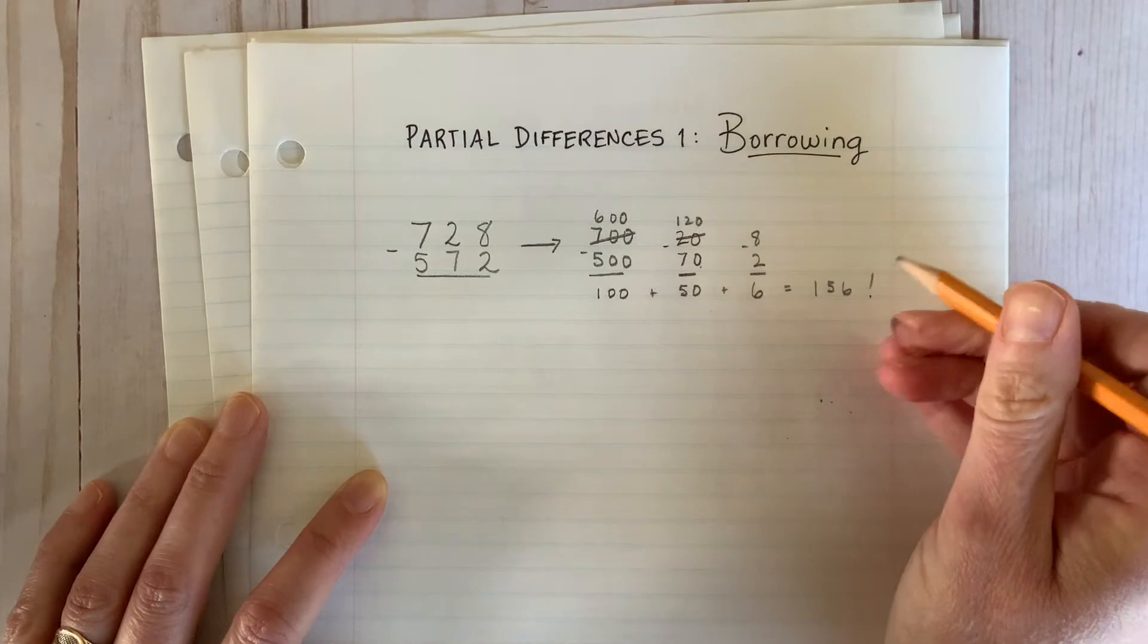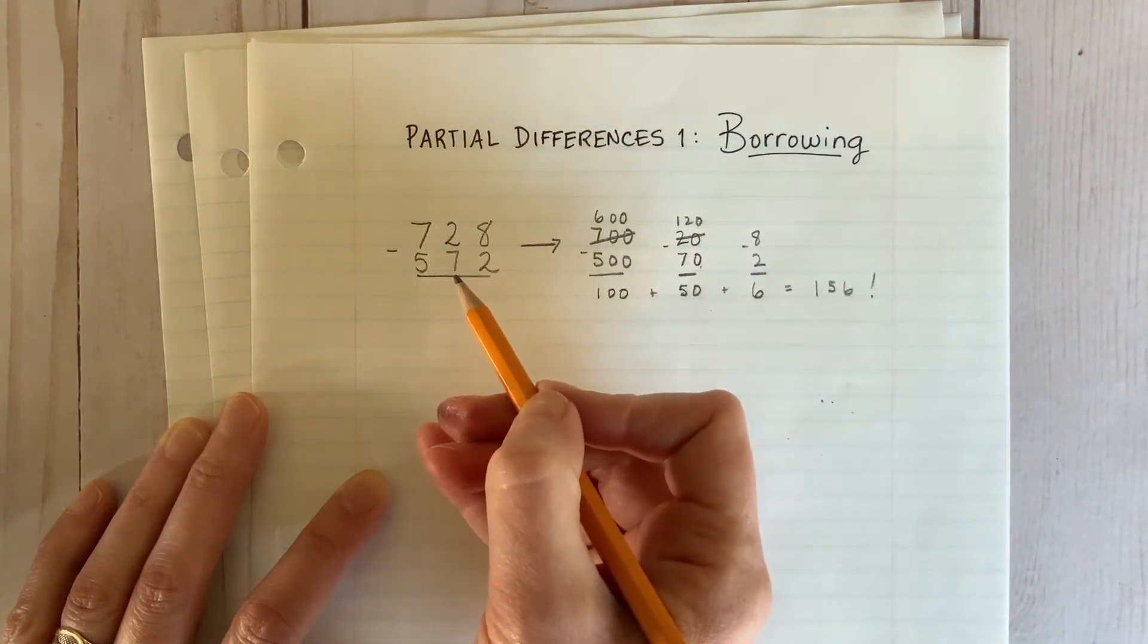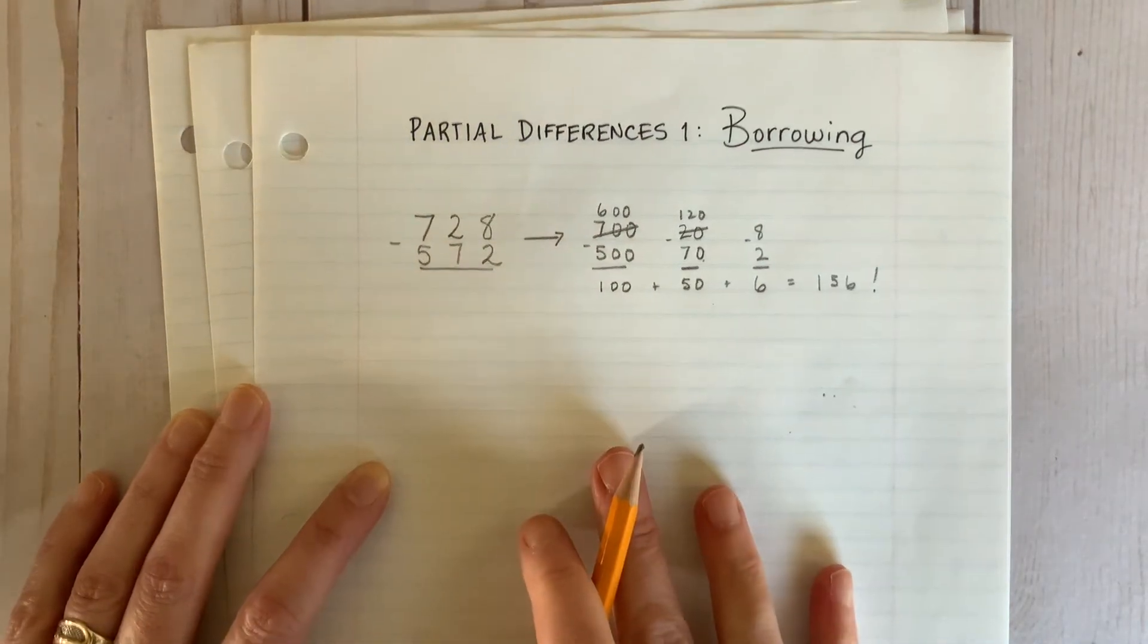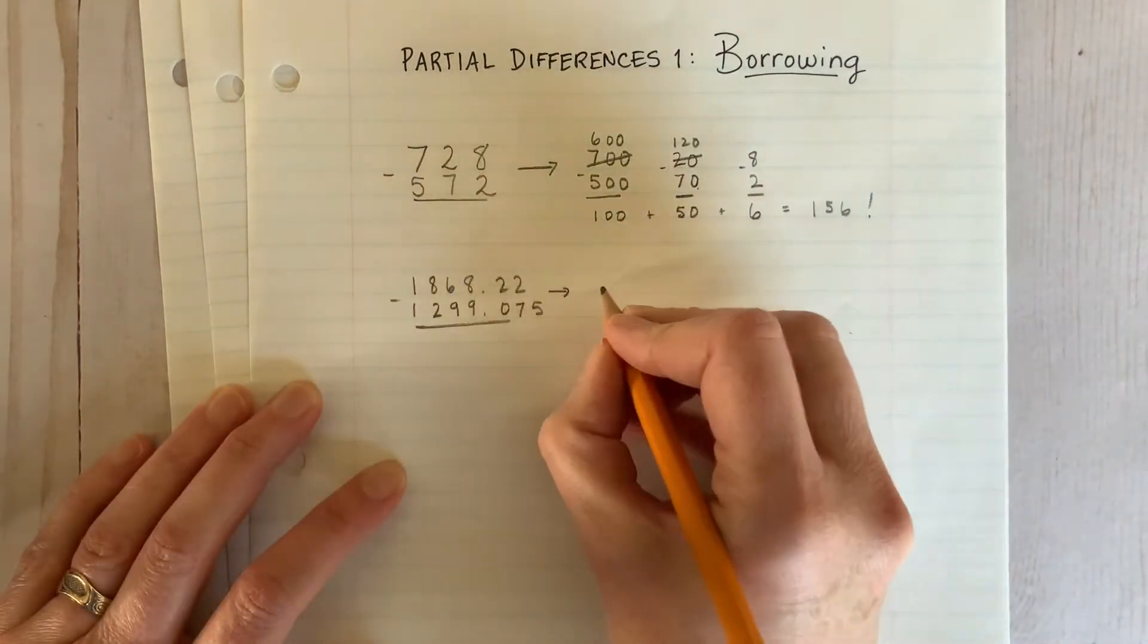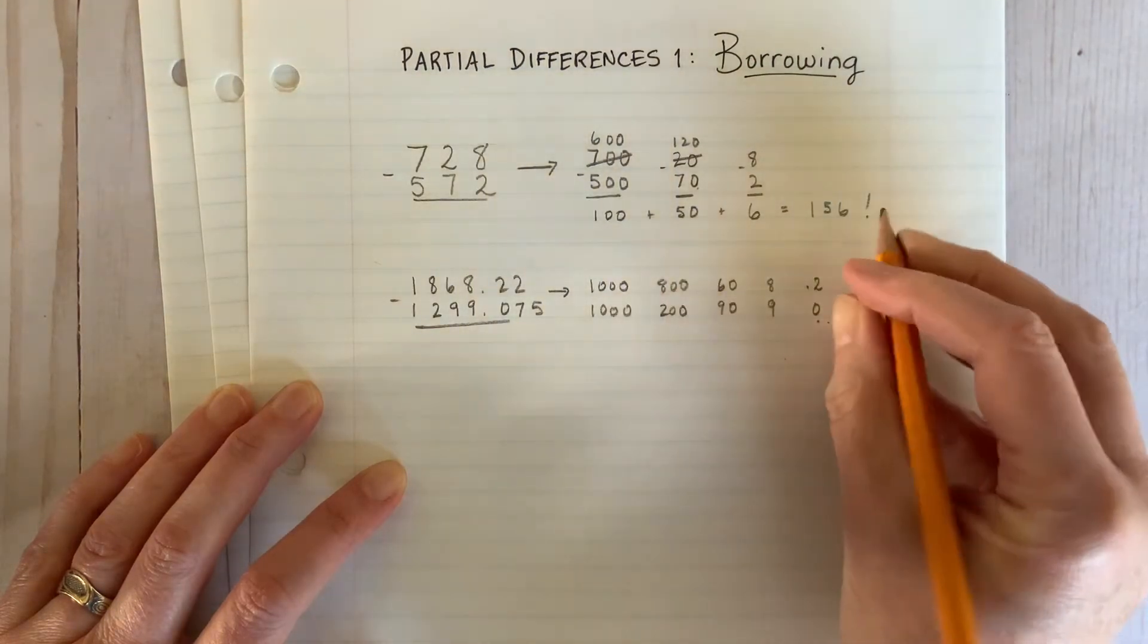The advantage of this version is that students can clearly see the true value of each digit. The disadvantage is that it can take a while, and it can be messy to use with larger, more complex numbers.